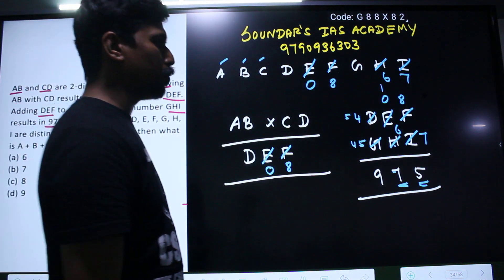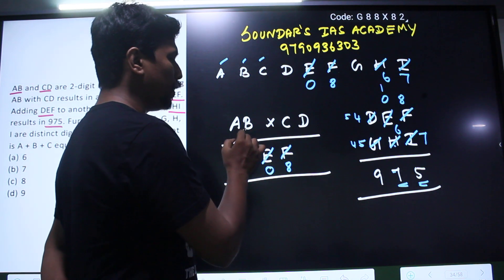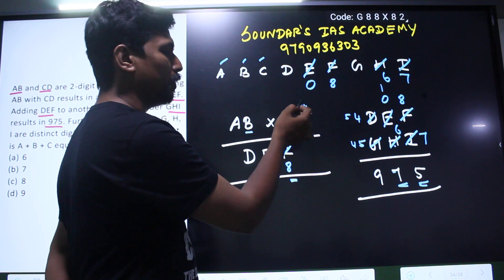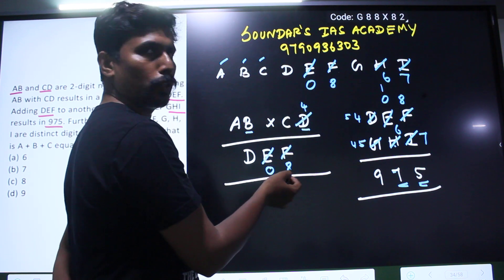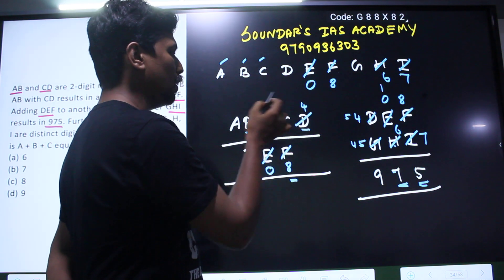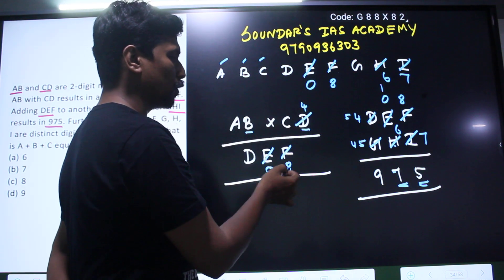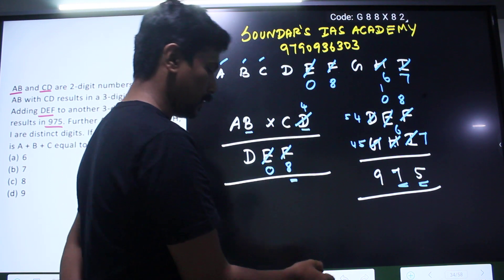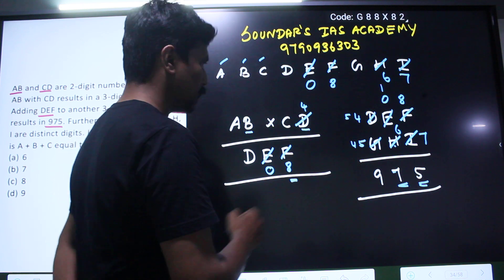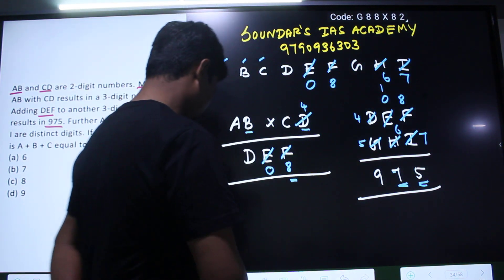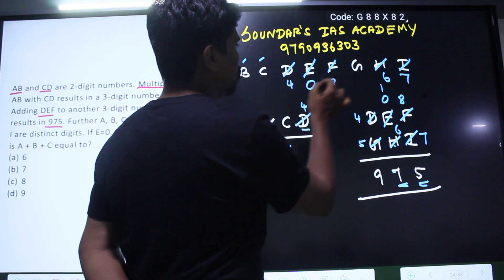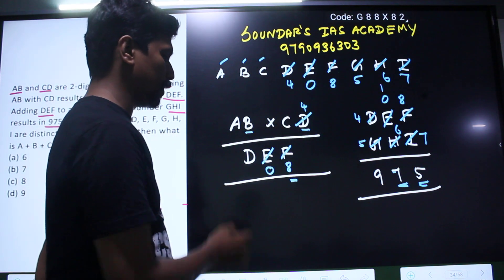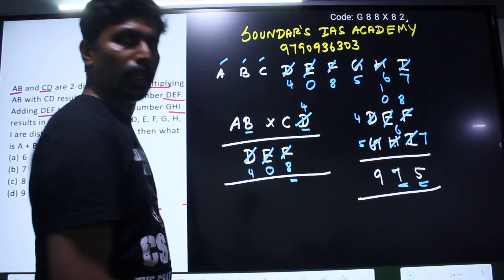If D is 4, then D is 5. If you have 5, then you have 5 and then 0. Therefore D is 5. How do you do it? D is 4, then G is 5. If you have 4, then D is 4.